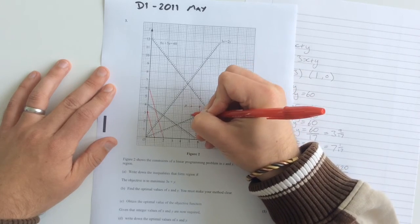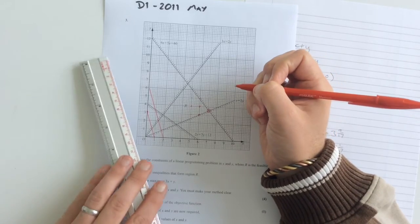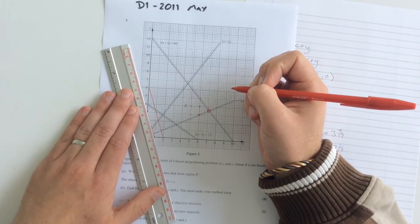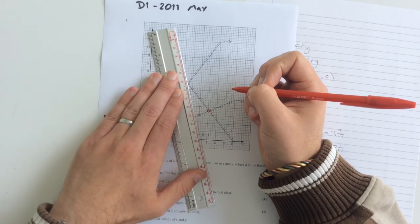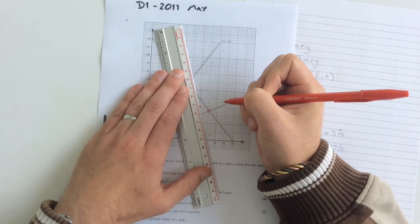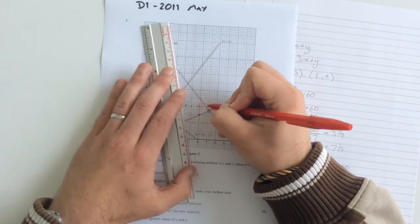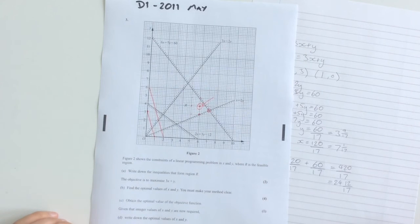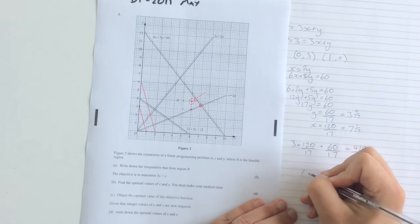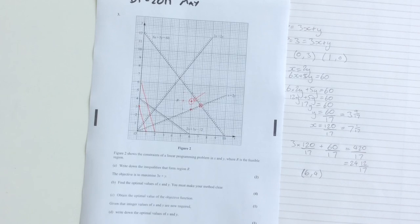And we've got some more over here, and we can sort of put a dot where each of them are. If we come back to our objective line, all we're going to do is follow that along until we get to the last one, which is this one. That's the last one we get to any further, and we're outside of the region, or there are no more. So this one here is our optimal solution if we're only allowed integers. So of course, that one is at 6, 4. And there, we've solved the whole question.